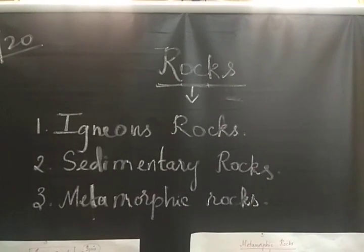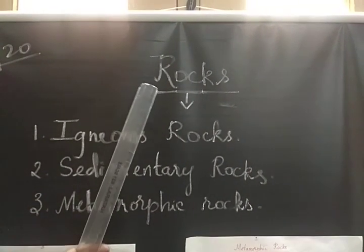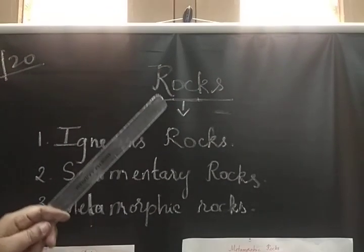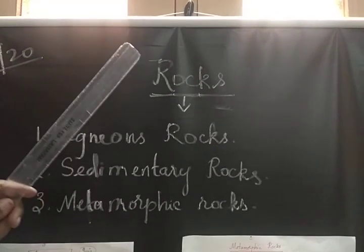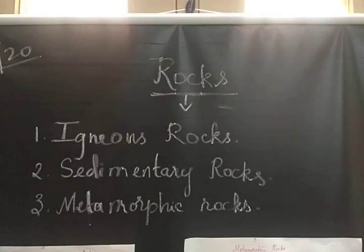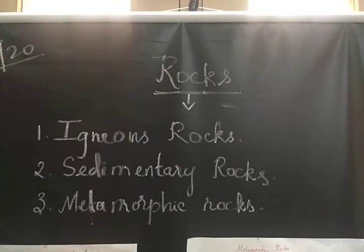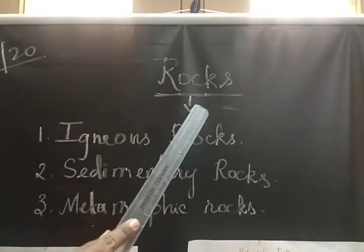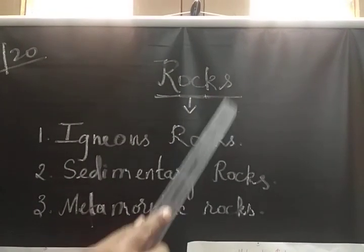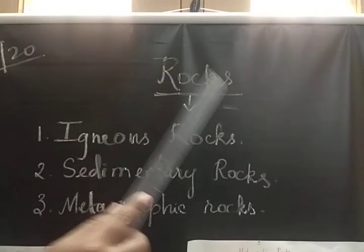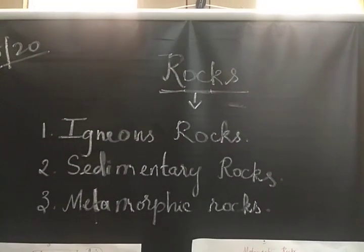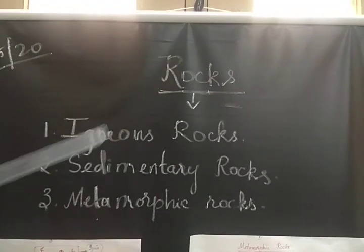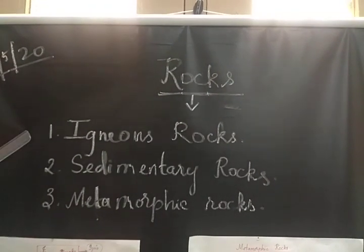Today's topic is rocks. We are going to discuss about rocks. What are rocks? Rocks are an aggregate of minerals on the earth's crust. Based on their formation, rocks are classified into 3 types by geologists.